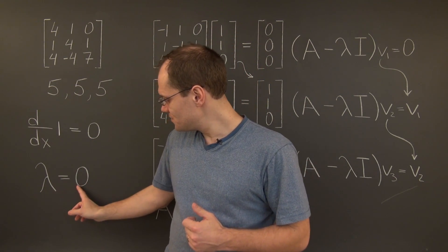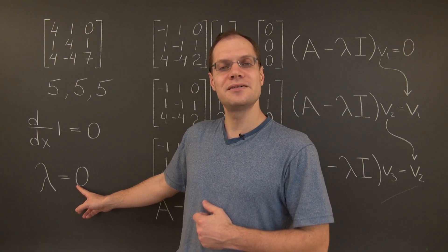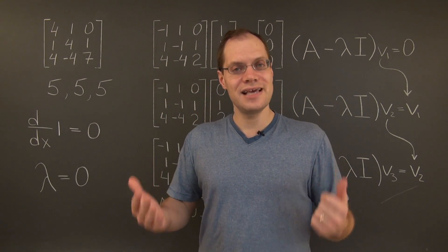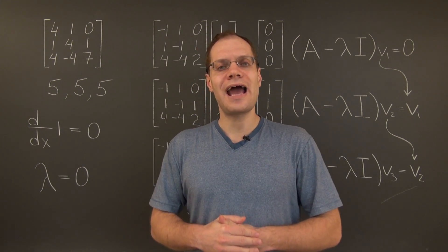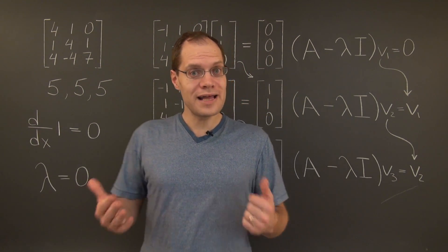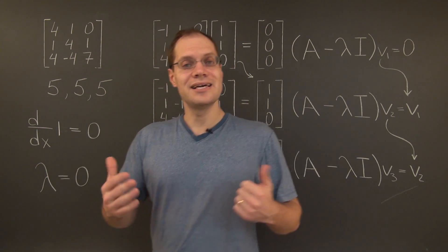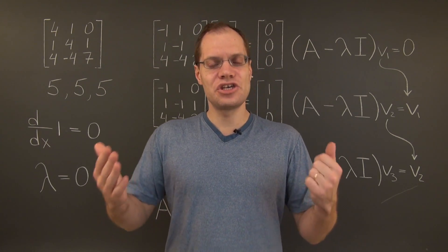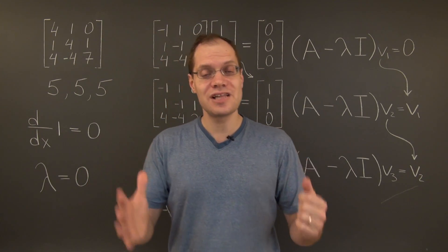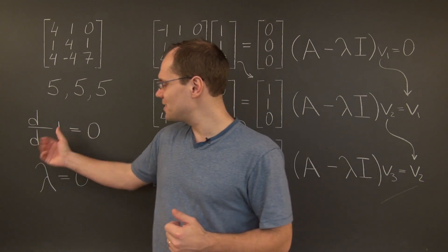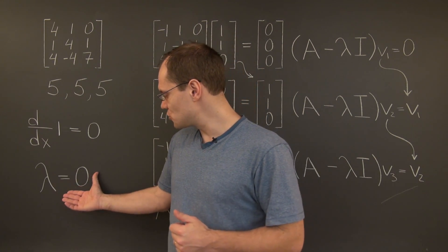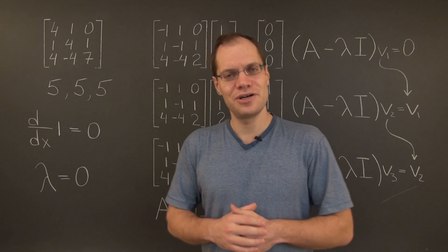So 0 is at least a double eigenvalue as far as algebraic multiplicity. But is it more? Is x in the range of this transformation? Yes — a preimage is one-half x squared. So the algebraic multiplicity of this eigenvalue is at least 3. And is one-half x squared in the range of this transformation? Yes — the preimage is one-sixth x cubed. So the algebraic multiplicity of this eigenvalue is at least 4. And the process stops right there, because we're only considering this transformation on the space of cubic polynomials, so there is nowhere else to go. This shows that 0 is a quadruple eigenvalue as far as algebraic multiplicity.